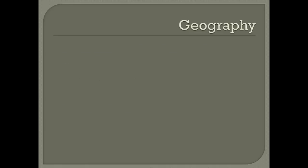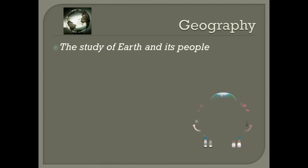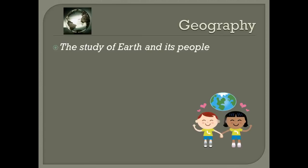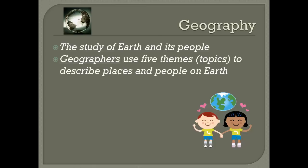We are first going to start by defining the topic of geography. Geography is the study of Earth and its people. This is a very large topic that obviously includes many different cultures and aspects of our environment. Therefore, geographers use five themes to describe the places and people on Earth.